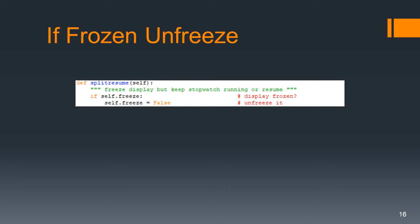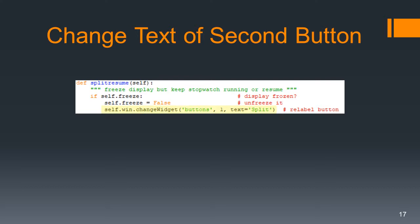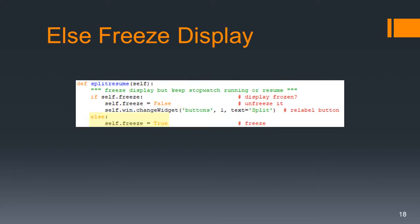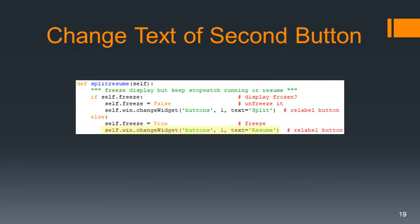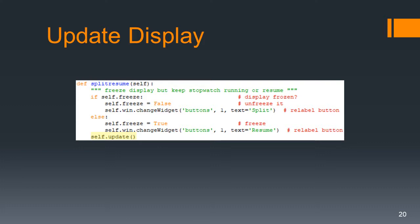Here's our new method, split_resume. It has only one argument, which is the self argument, and it doesn't return anything. We start out with if self.freeze - then we say self.freeze is False, which is going to unfreeze our display. Then we change the text of the second button to the word split. Else, we want to freeze the display, so self.freeze is going to be True, and we change the text of the second button to resume. In either case, we want to update the display.